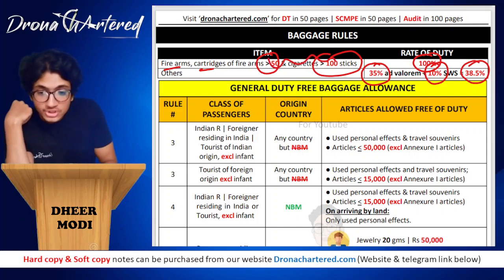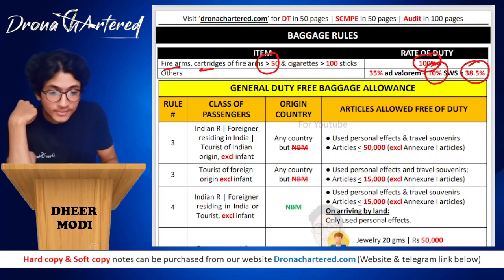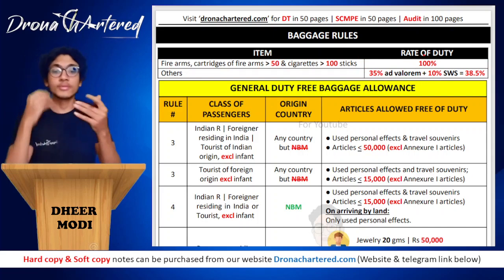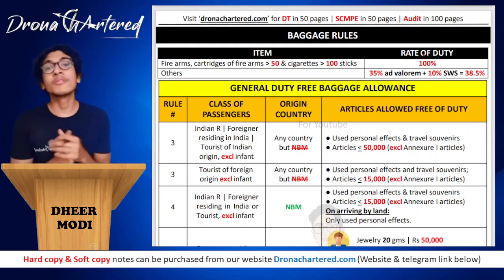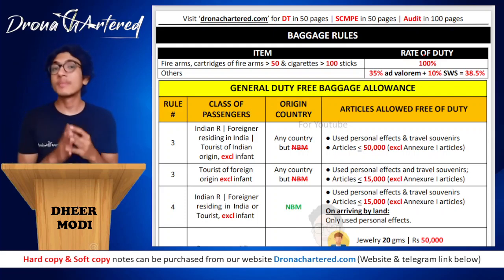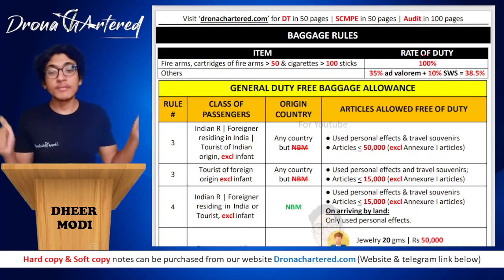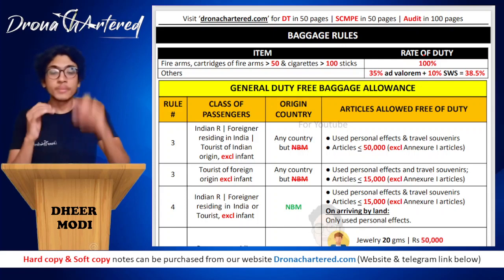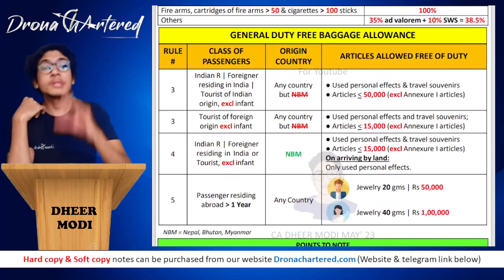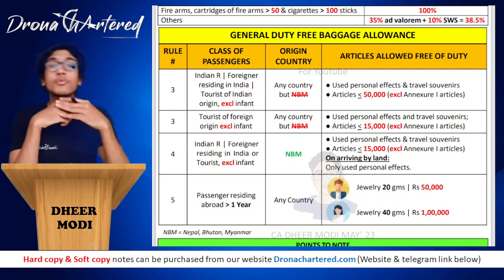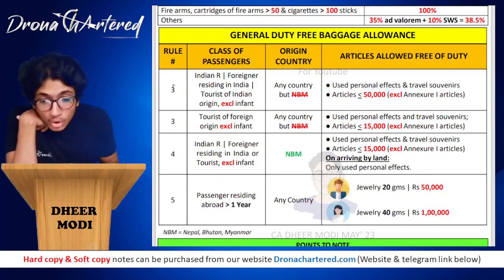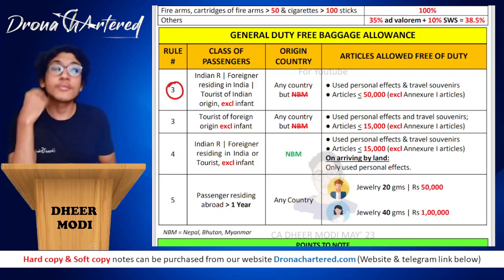Now there are general duty-free baggage allowances — certain items you are allowed to bring into India. Whenever you're coming from outside India, you may have seen people bringing big TVs etc. There are certain conditions and limits given; only these will be called duty free, otherwise you will have to pay duty on those goods. Starting with Rule 3.